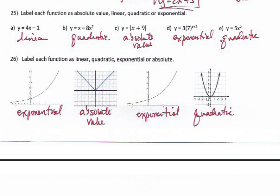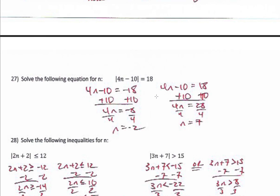Number 25 covers labeling functions by their equations: linear (highest exponent is 1), quadratic (highest exponent is 2, squared), absolute value (shown by bars), exponential (variable is in the exponent position). By looking at graphs: a gentle curve going up or down is exponential; a sharp V-shape is absolute value — V for value; a gentle U-shaped curve is quadratic — the second letter of quadratic is U.